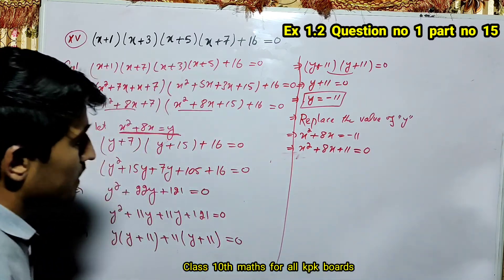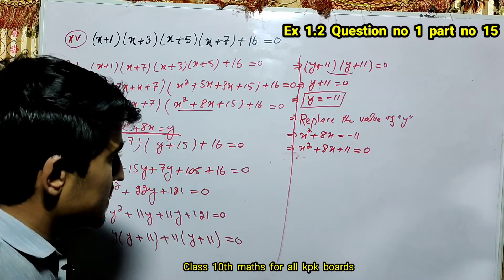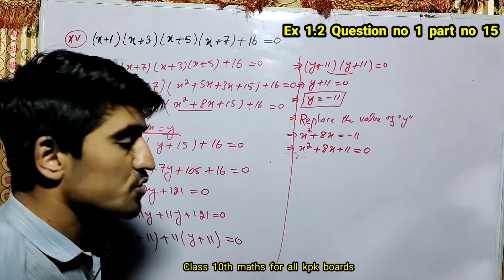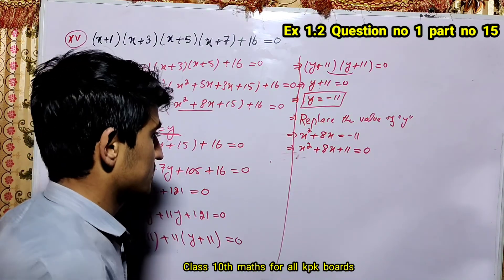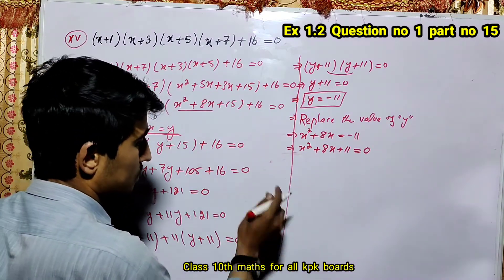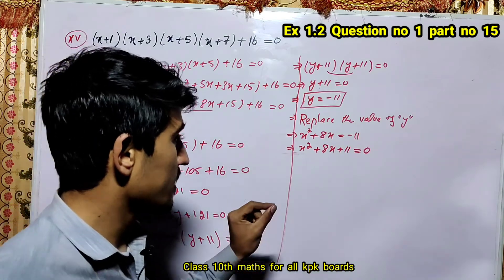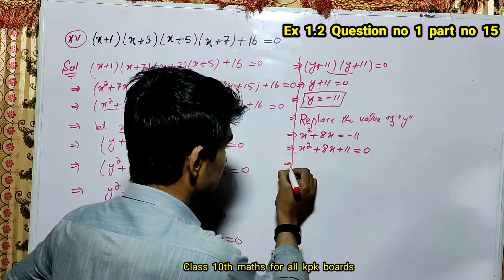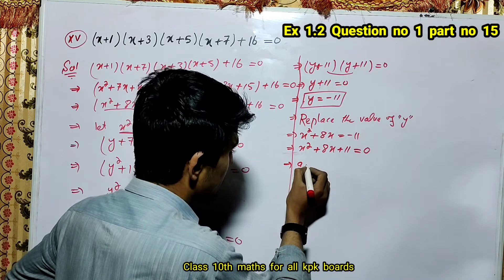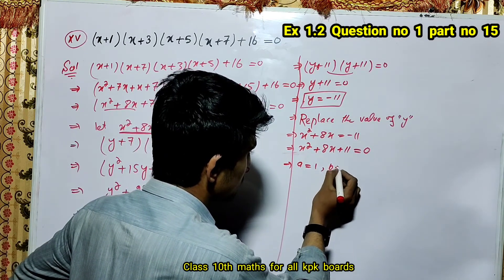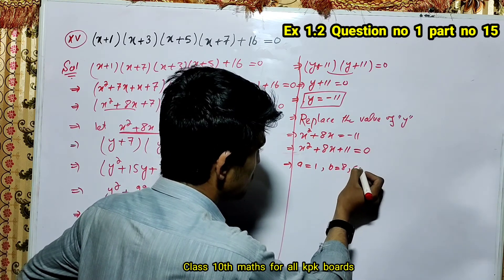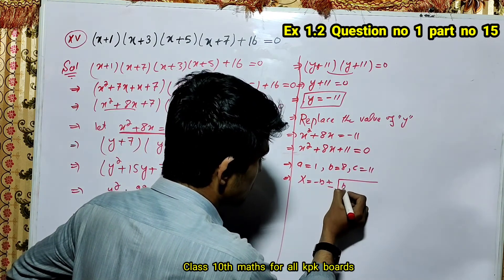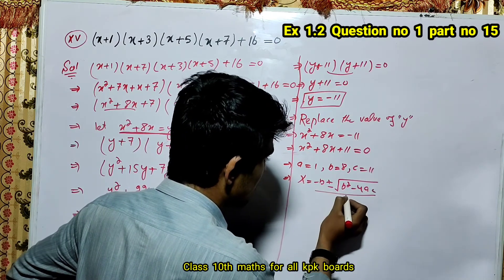So x squared plus 8x plus 11 is equal to 0. My dear students, our quadratic equation is formed. We apply the quadratic formula. Here a is equal to 1, b is equal to 8, and c is equal to 11. Quadratic formula: x is equal to minus b plus or minus under root b squared minus 4ac divided by 2a.